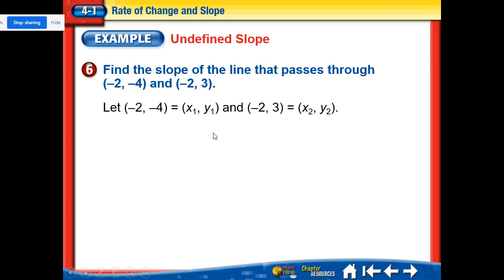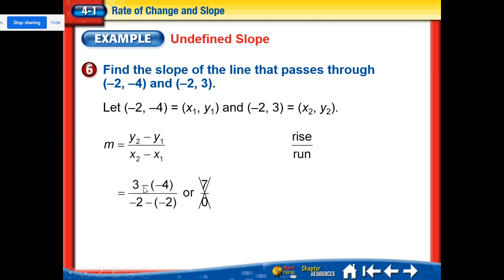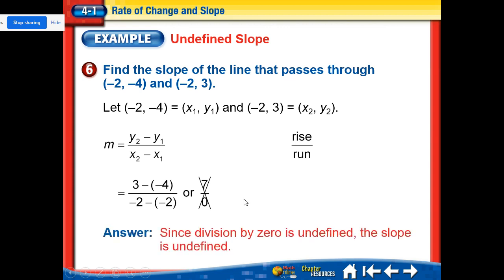For the undefined slope example: the numerator is three minus negative four, and the denominator is negative two minus negative two. When we subtract the same thing, we get zero — so we have seven over zero. That means go up seven and over none, but since we can't divide by zero, the slope is undefined. Those are the four types of slope — mostly you'll see positive or negative, but zero and undefined are also possible.